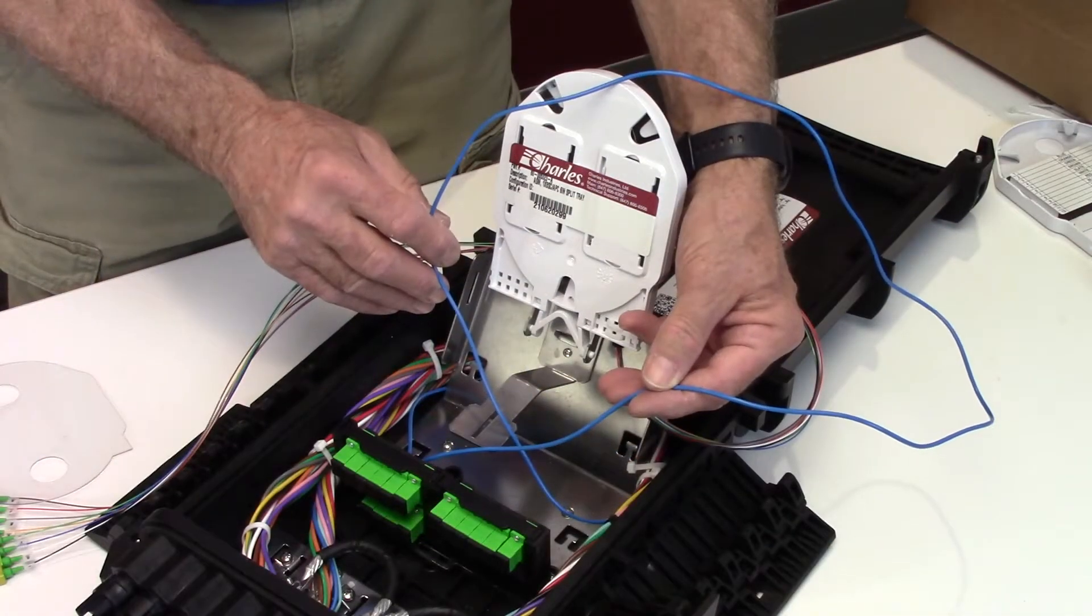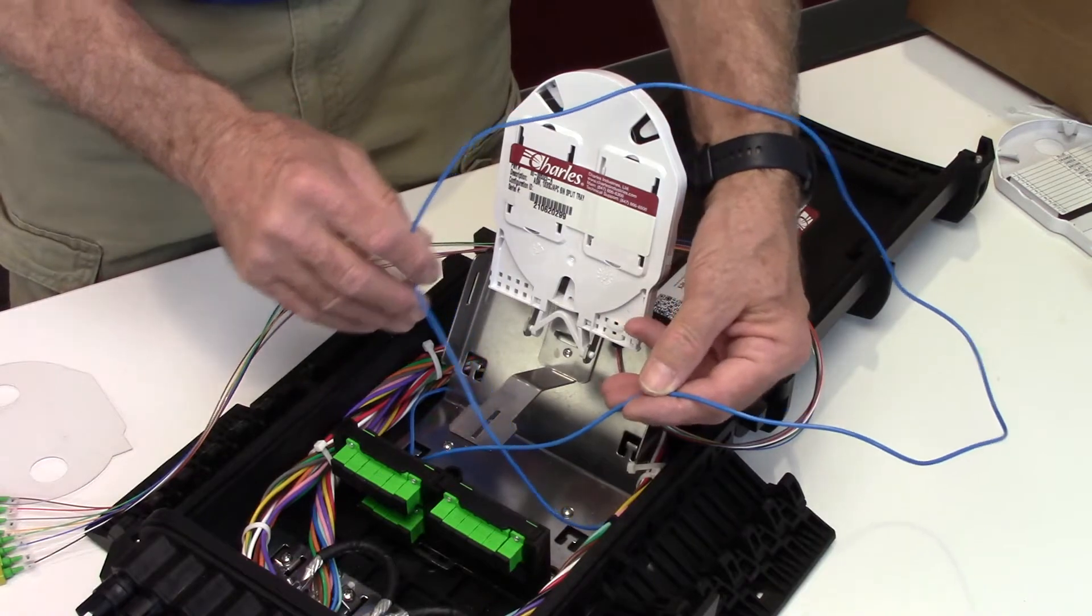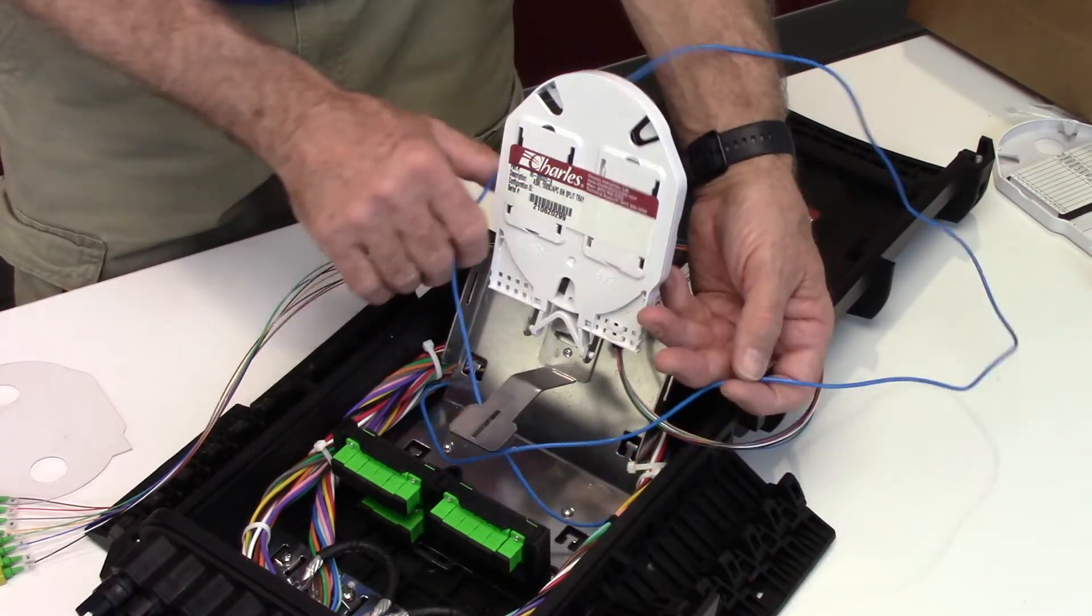Loop the tube under the tray and mark the tube for removal at each corner of the tray.